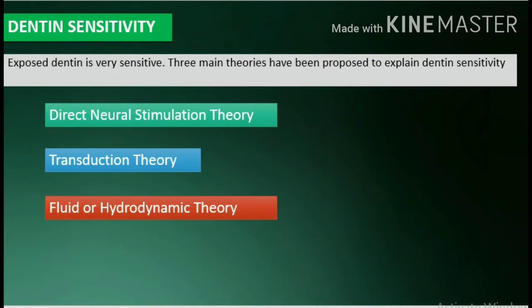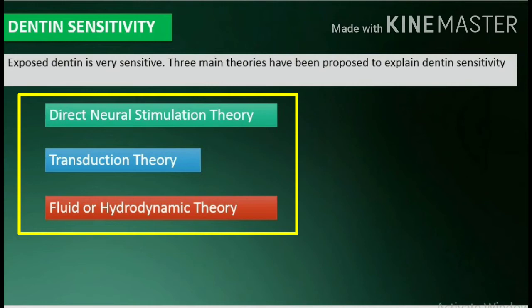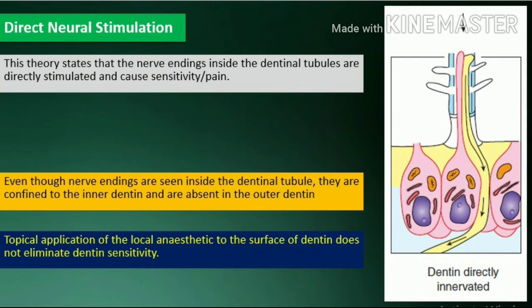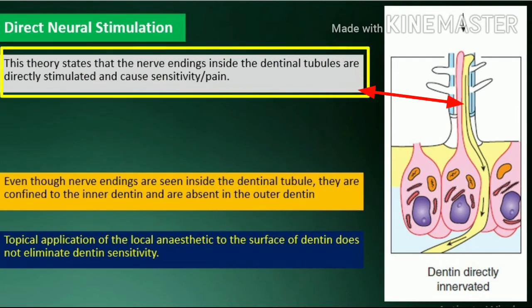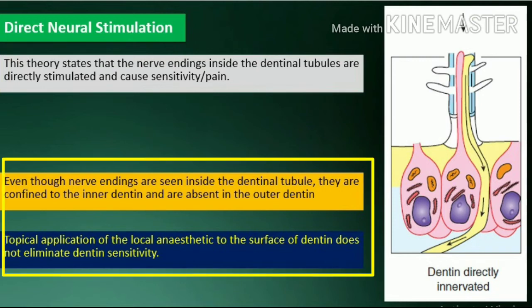Dentin sensitivity: exposed dentin is very sensitive. Three main theories have been proposed to explain dentin sensitivity: direct neural stimulation theory, transduction theory, and fluid or hydrodynamic theory. The direct neural stimulation theory states that nerve endings inside the dentinal tubules are directly stimulated and cause sensitivity or pain. Arguments against this theory include: nerve endings are confined to the inner dentin and are absent in the outer dentin, and topical application of local anesthetic to the surface of dentin does not eliminate dentin sensitivity.